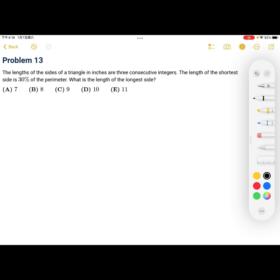Okay. Problem 13. The lengths of the sides of a triangle in inches are three consecutive integers. The length of the shortest side is 30% of the perimeter. What is the length of the longest side?